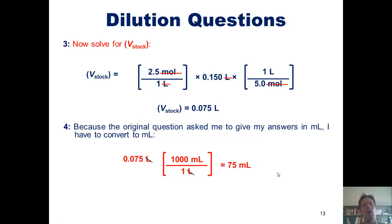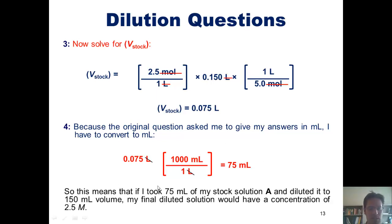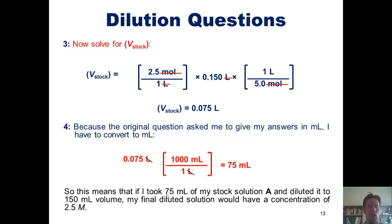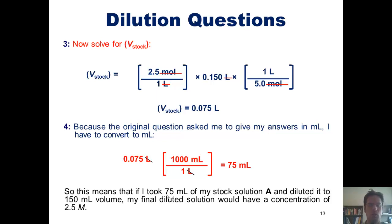What does that mean? It means that if I took 75 milliliters of my original stock solution and diluted it to a total volume of 150 milliliters by adding another 75 milliliters of water, my final diluted solution would have a concentration of 2.5 moles per liter.